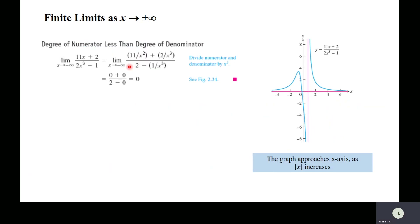In the next example, the degree of the numerator is less than the degree of the denominator. You apply the same criteria — divide by the highest power in the denominator. After applying the limit: the constant 2 in the denominator remains as 2, and 1/x³ goes to 0. So the limit at infinity is 0. On the graph, the function approaches the x-axis, meaning y = 0.